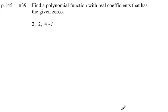Page 145, problem number 39. Find a polynomial function with real coefficients that has the given zeros: 2, 2, and 4 minus i.